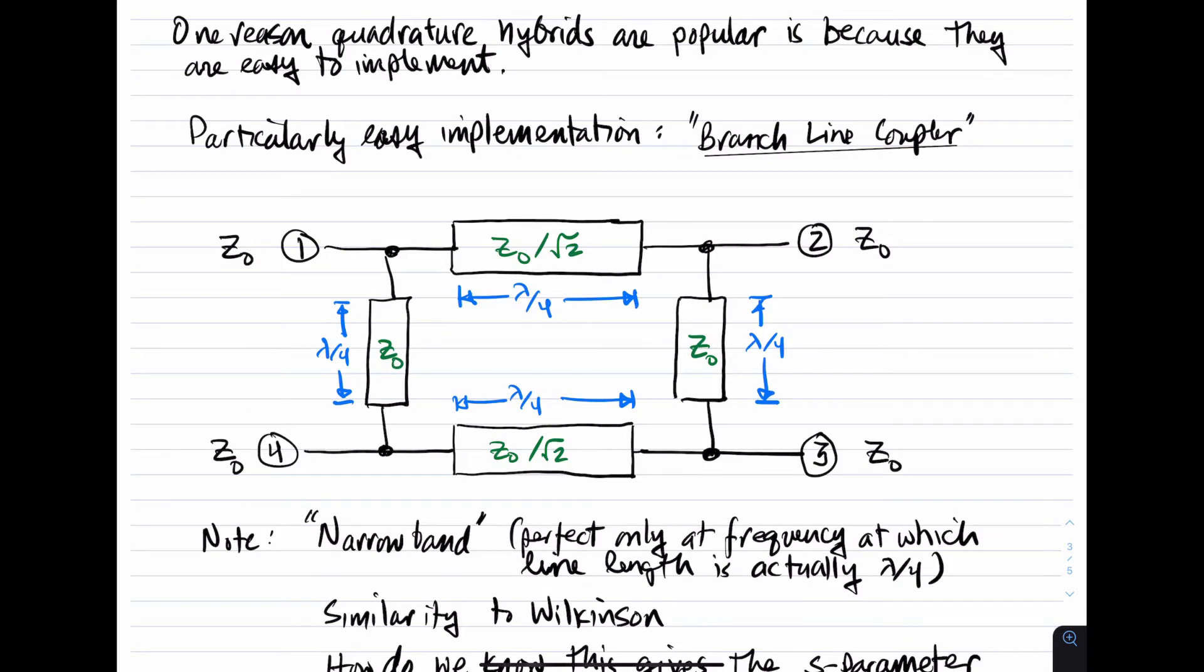One reason quadrature hybrids are so popular is because they're pretty easy to implement, and there's a bunch of different ways to implement them. A particularly easy and convenient implementation is the branch line coupler. So a branch line coupler is a four-port device which is well described as a quadrature hybrid.